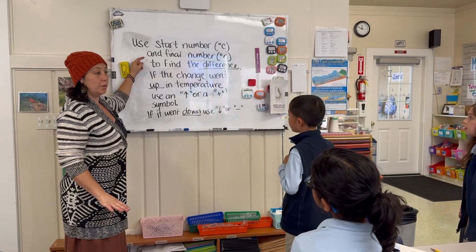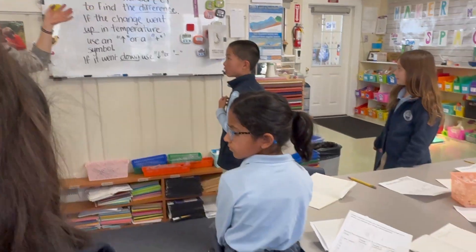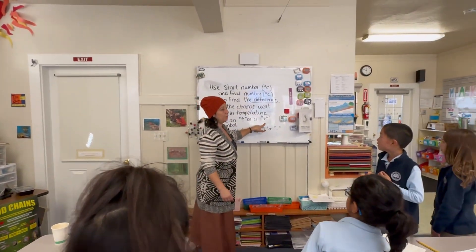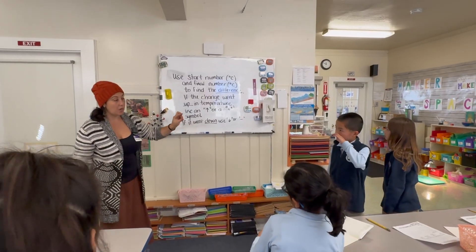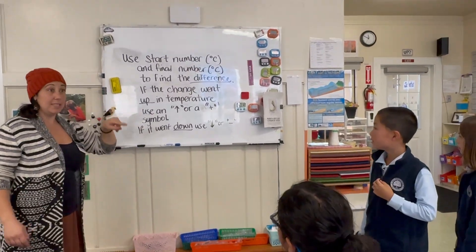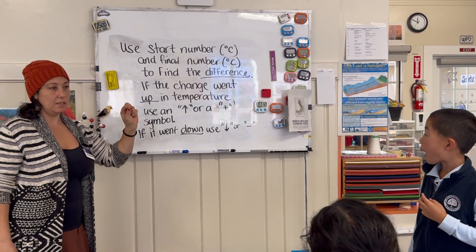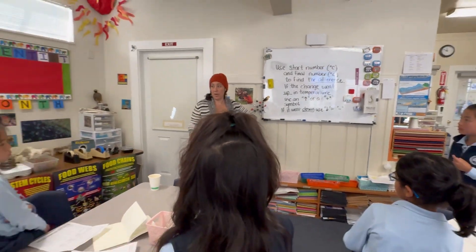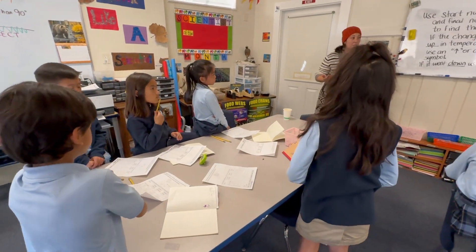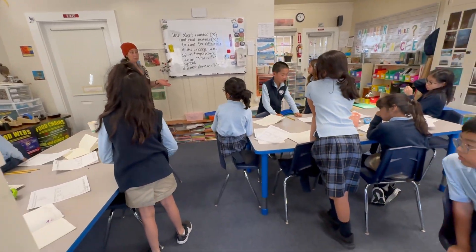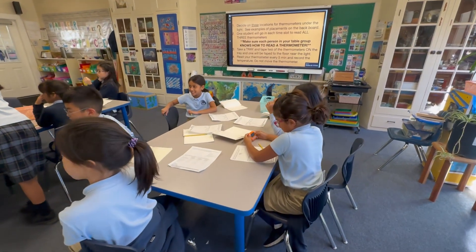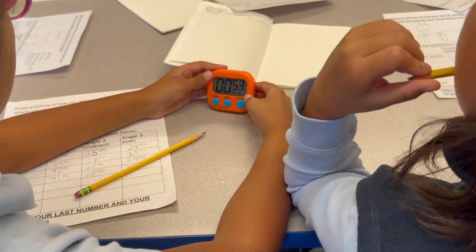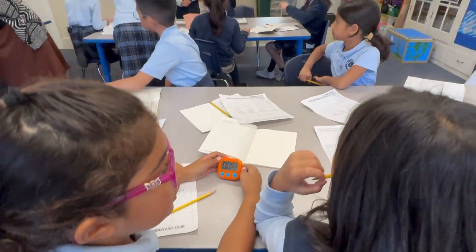Okay, that's time — get your final temperature. If it went up 10 degrees, write an up arrow or a plus in that box as the total change. If it went down, use a down arrow or minus symbol. Change could be up or down — if I say the temperature changed, that doesn't tell you whether it got warmer or colder. You need to say which way it changed. Once you have your next number you'll be ready in two minutes.